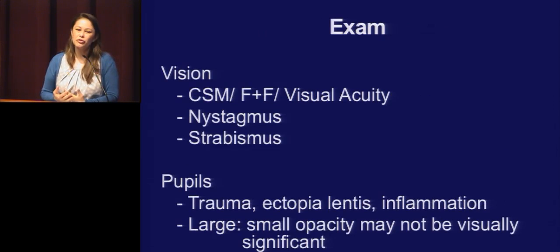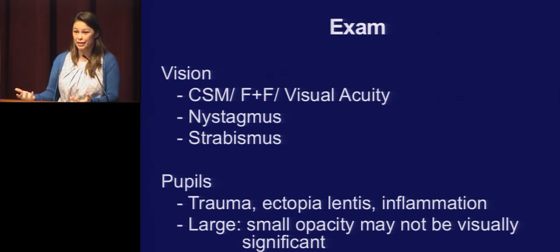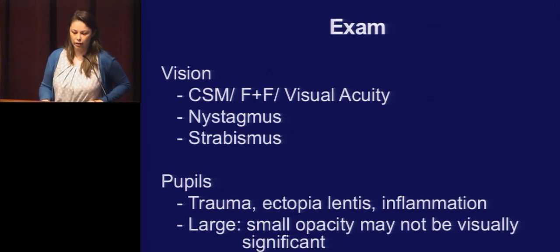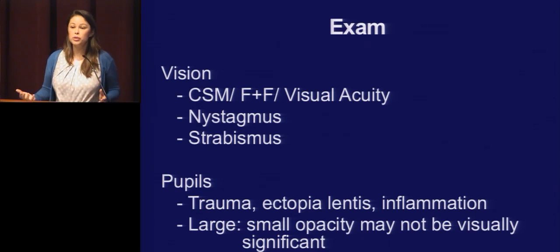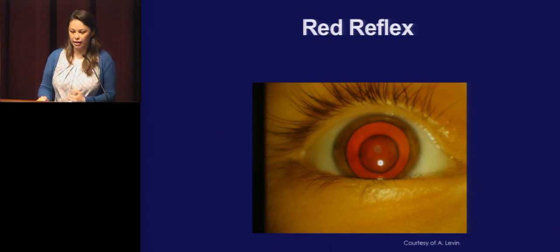You're going to check vision and look for nystagmus — nystagmus shows low vision and suggests it's been there a while and started at a very young age. Look for any strabismus: esotropia or exotropia. Check the pupil for any signs of trauma or inflammation. If they have a large pupil when dilated and a small opacity, that's a good sign that maybe it's not visually significant.